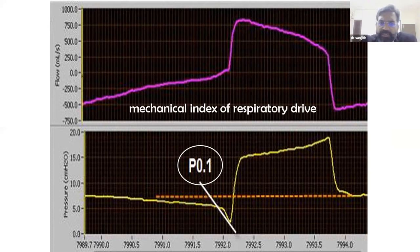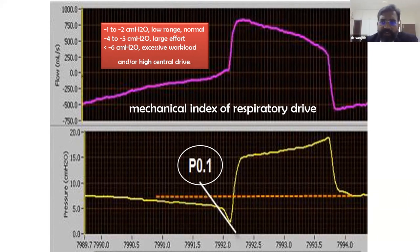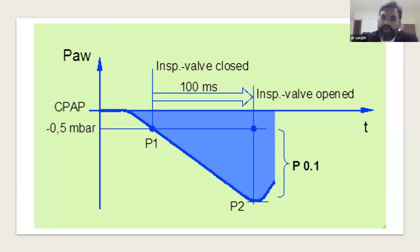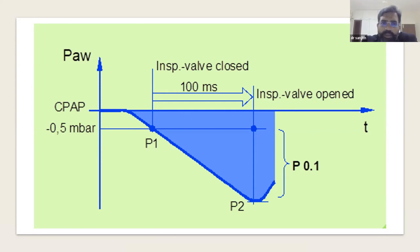P0.1 is measured by highly sophisticated solenoid valves monitoring the pressure slope from P1 to P2 in the first 100 milliseconds after valve closure. Clinically, a very negative P0.1 (e.g., −7 to −10) indicates high work of breathing. P0.1 can be used to guide pressure support ventilation settings and to titrate PEEP in patients with dynamic hyperinflation.